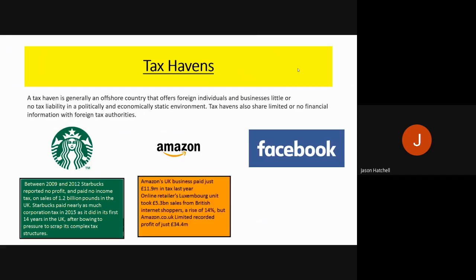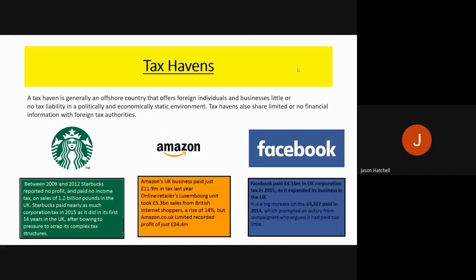Amazon only paid £11.9 million in tax last year, however it generated £5.3 billion from British internet shoppers — effectively offsetting their tax through an offshore tax haven without paying much in the UK. Facebook paid £4.16 million in UK corporation tax in 2015, a big increase on 2014's figure of only £4,327. The reason for the increase was that the UK government brought in new regulations on companies like Facebook to increase the tax rate and reduce tax evasion.